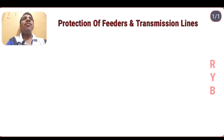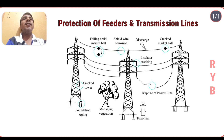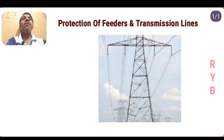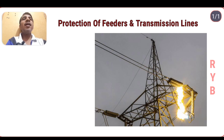As we know, the length of a power transmission line or feeder is generally quite long and it runs through the open atmosphere. A feeder is a conductor which transmits power from a generating station to a substation or distribution substation. Because of this, the probability of fault occurrence on a transmission line is much higher than on transformers and alternators, which is why a transmission line requires much more protective schemes.